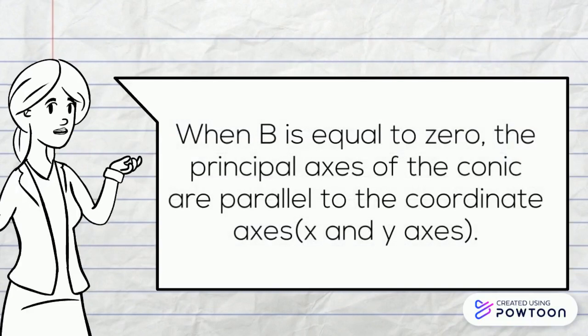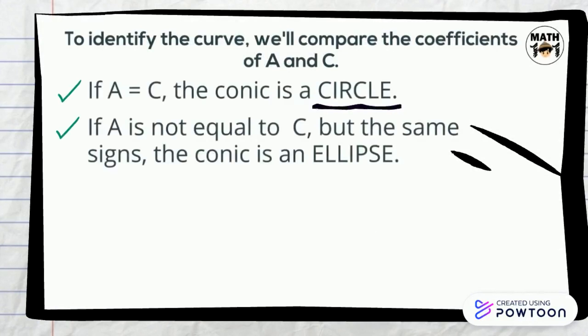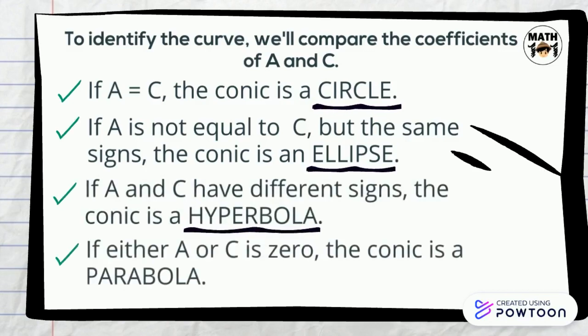If b is equal to zero, the principal axes of the conic are parallel with the x and y axes. By comparing the coefficients a and c, we can determine the type of conic. If they are equal, it is a circle. If they are not equal but have the same sign, the conic is an ellipse. But if a and c have different signs, the conic is a hyperbola. And if a or c is equal to zero, it is a parabola.